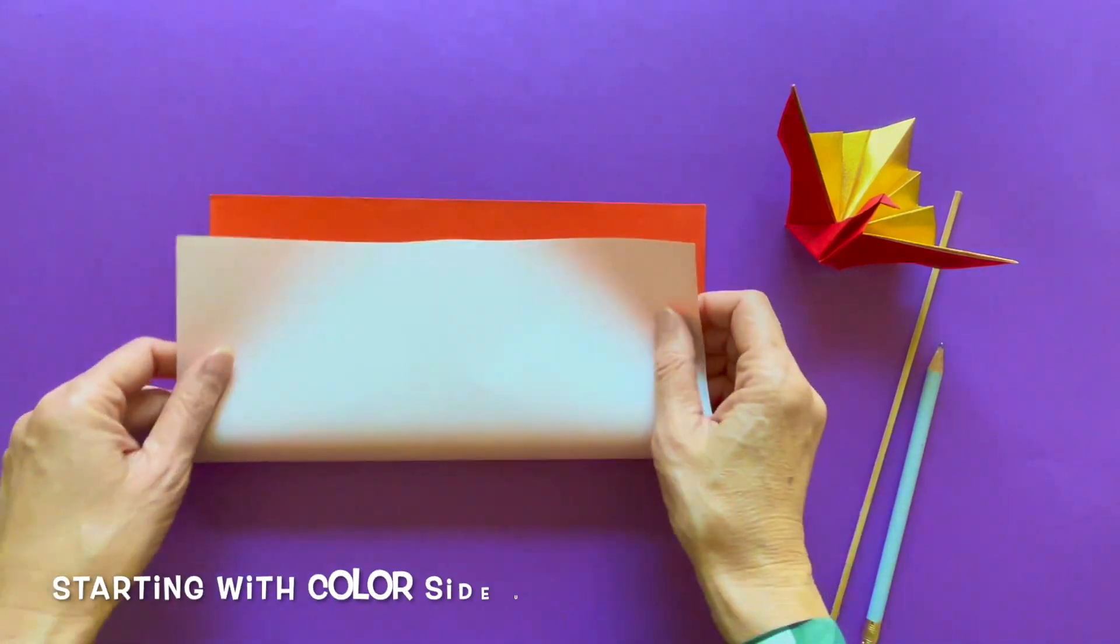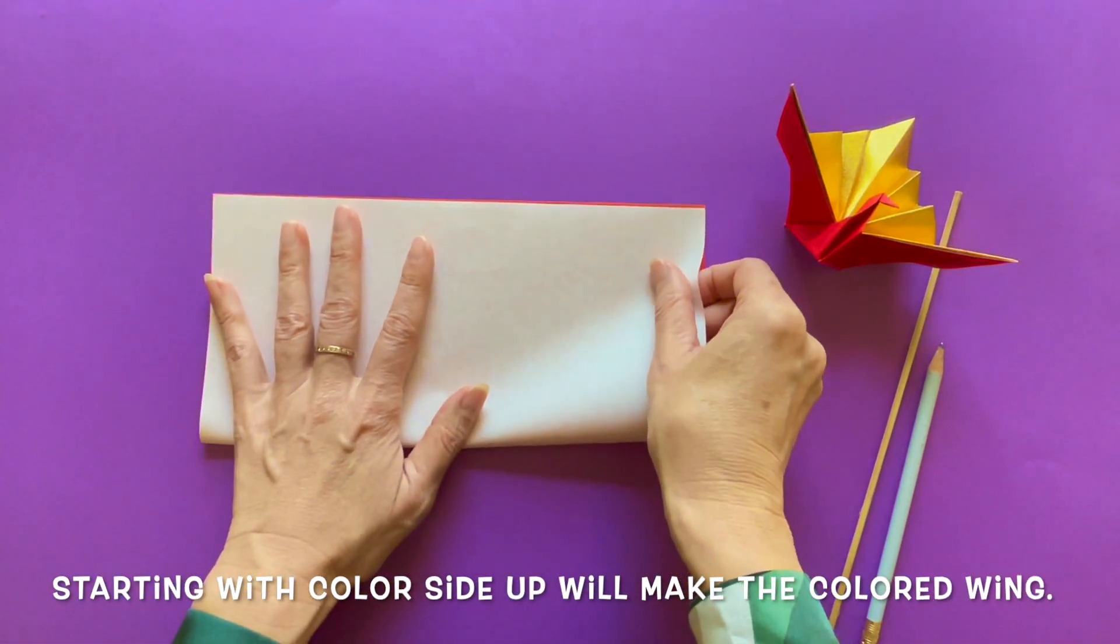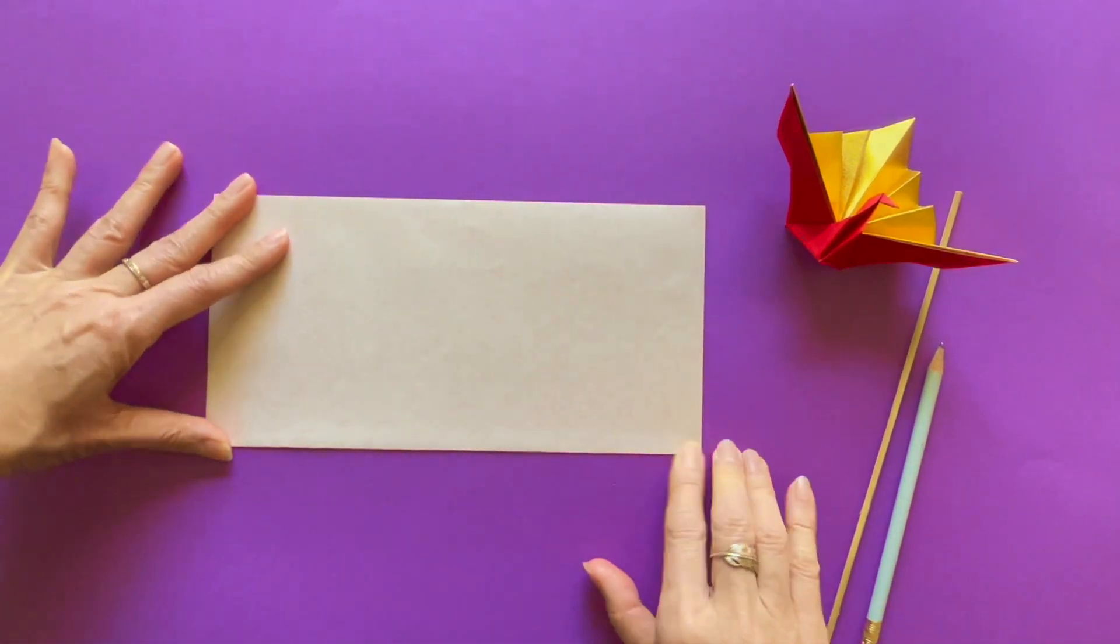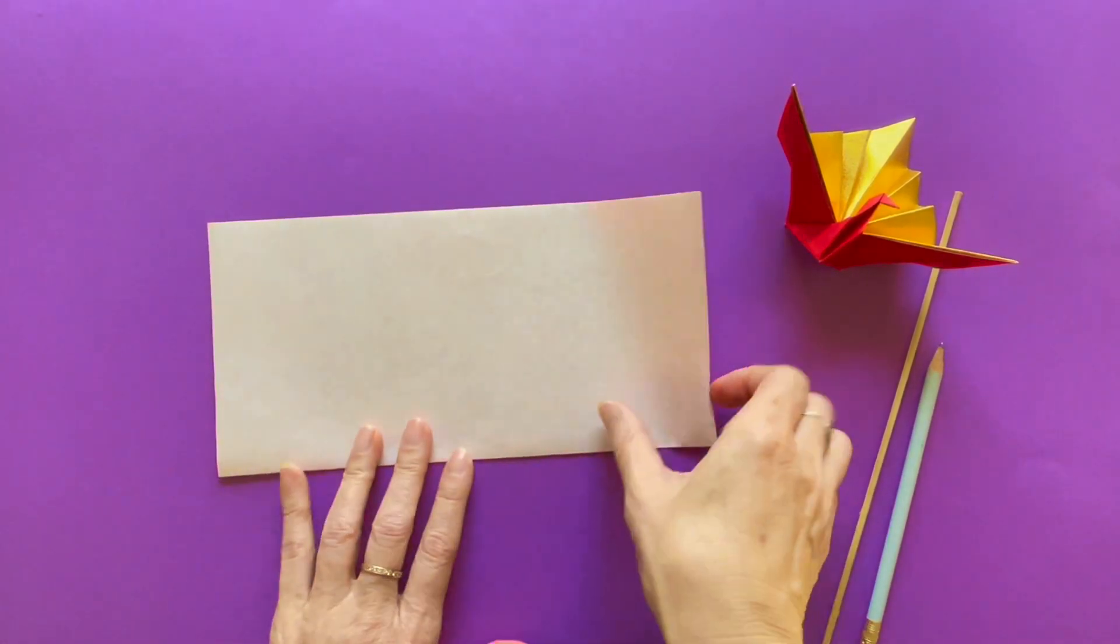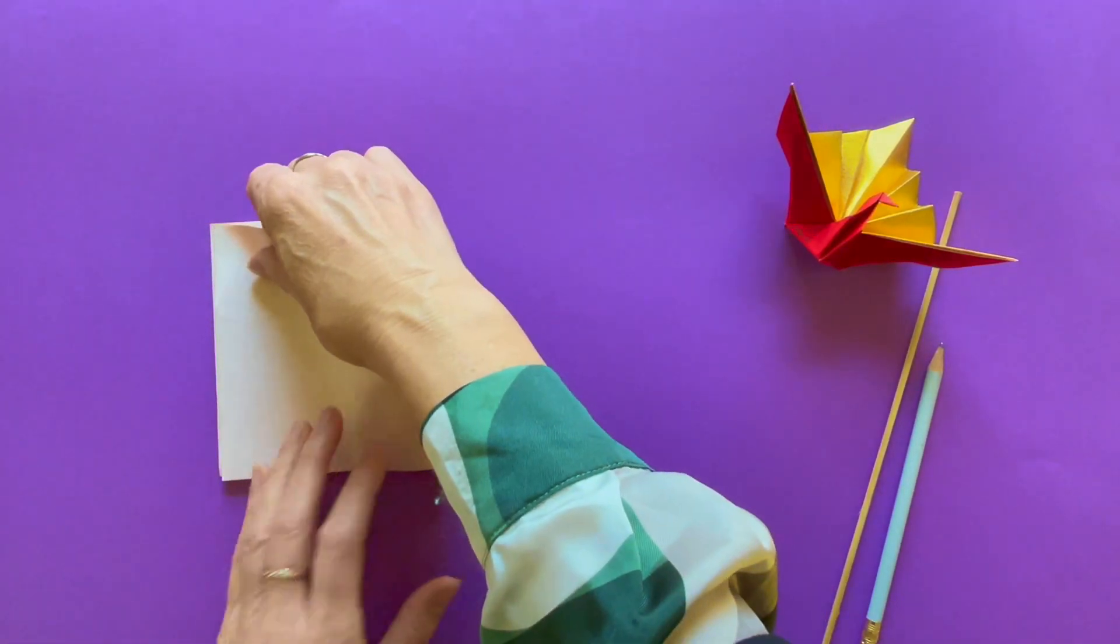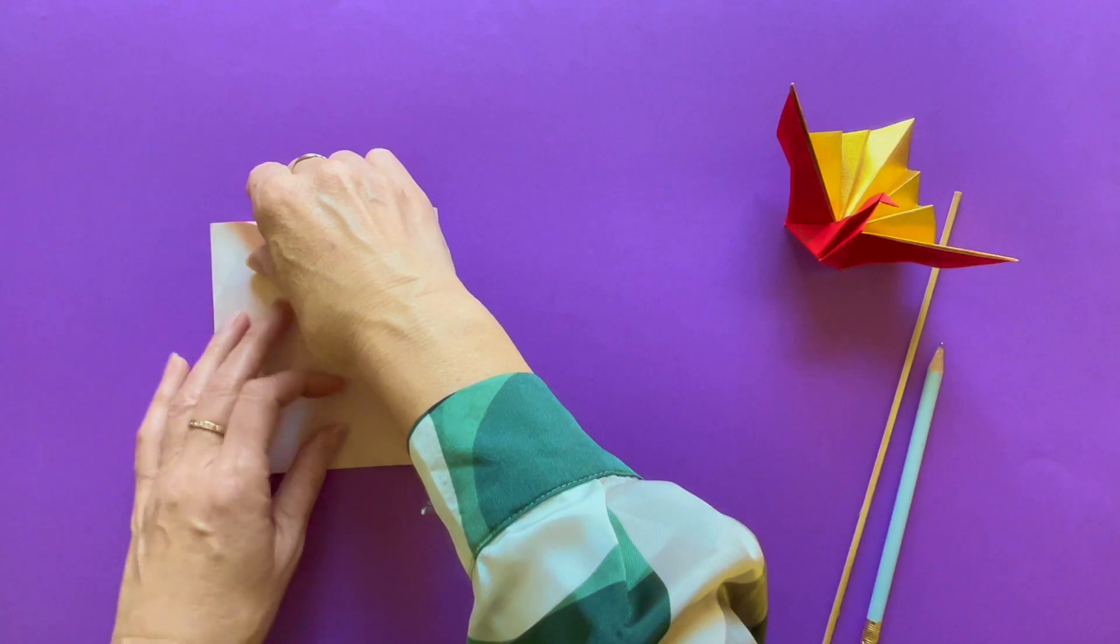Color side up, we are going to make this square to quarter size. So fold it in half to rectangle and fold it again right to left or left to right to fold quarterly.